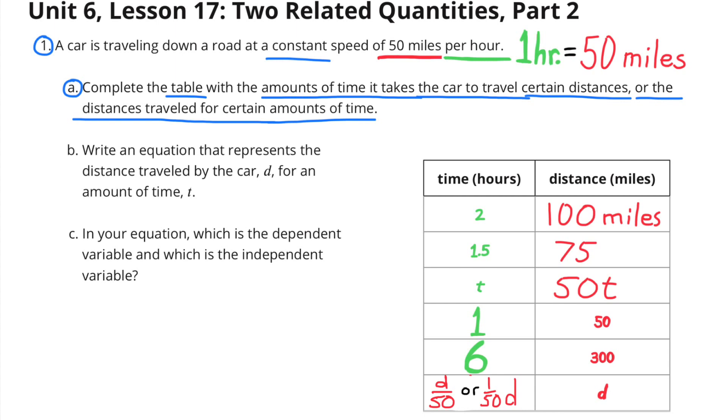Part A. Complete the table with the amounts of time it takes the car to travel certain distances, or the distances traveled for certain amounts of time. The left side column of the table represents time, or hours, and the right side of the table represents distance, or miles.